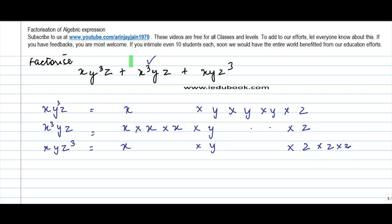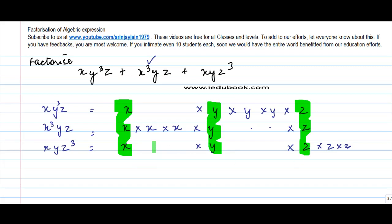Now I find out what are the common factors. x is a common factor across all three terms, y is a common factor across all three, and z is a common factor across all three. The signs I have are plus, plus — so there is a plus between each term.